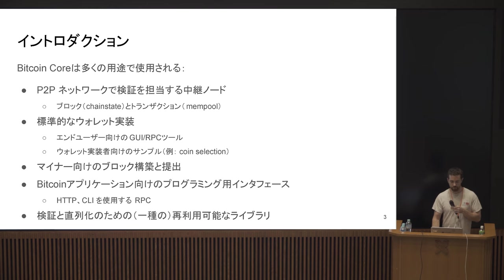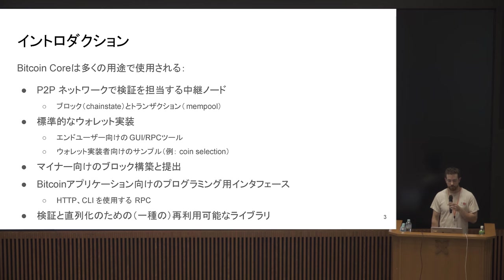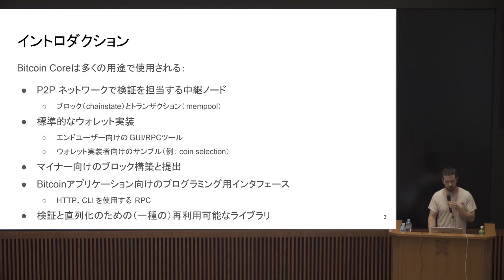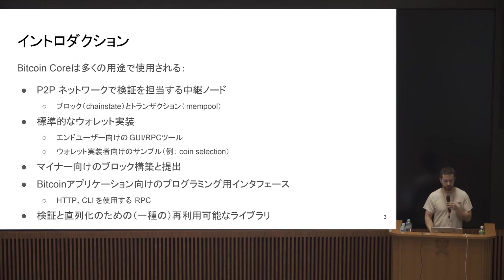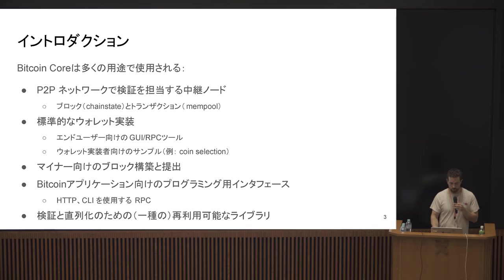Bitcoin Core does a number of things. The most essential role it serves is to be a validating relay node in the peer-to-peer network — passing around blocks and transactions and maintaining some notion of validity. It's also a wallet implementation, a GUI and RPC tool for end users who want to manipulate coins, and a working example for people doing wallet implementation. Bitcoin Core right now has one of the most sophisticated coin selection algorithms, a reference implementation for other wallets. It handles block assembly and submission for miners, provides a programmatic interface for general Bitcoin applications like block explorers, and is a reusable library for validation and serialization.